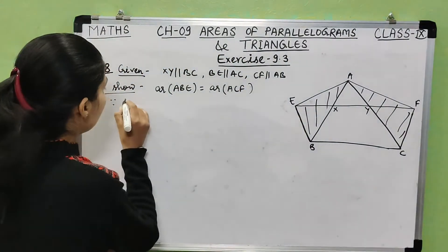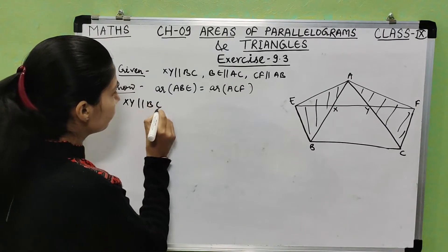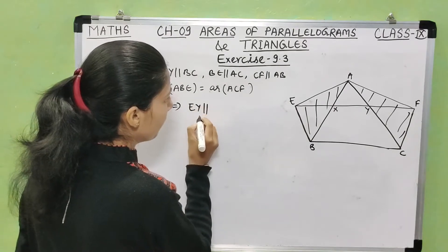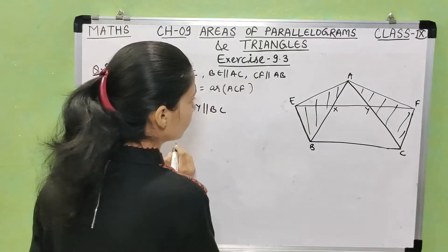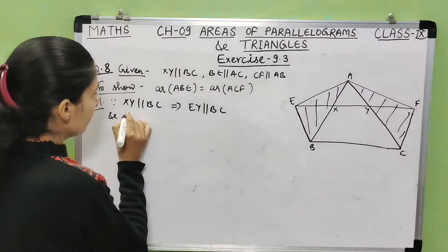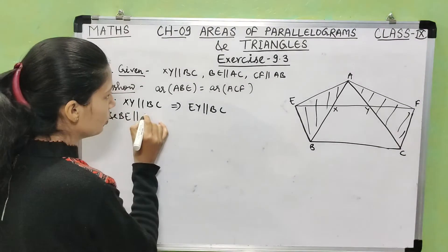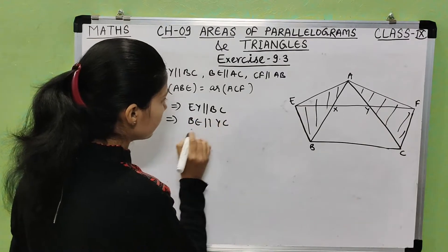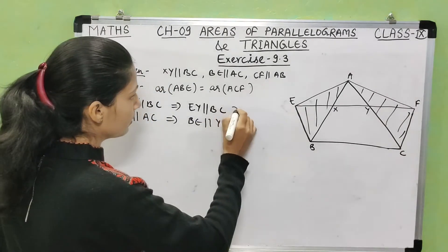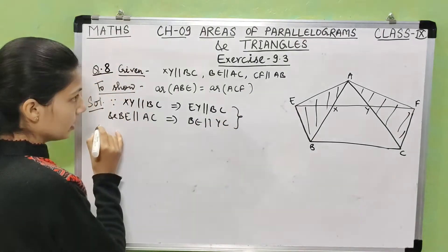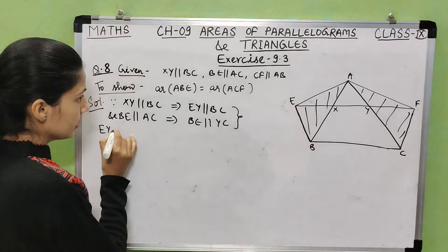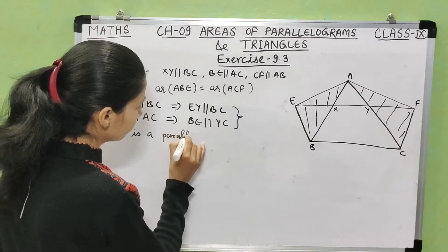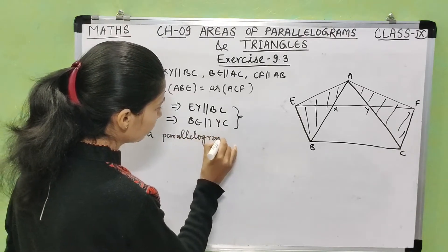Since XY is parallel to BC, EY is parallel to BC. And BE is parallel to AC, which implies BE is parallel to YC. So quadrilateral EYCB is a parallelogram. Similarly, since XY is parallel to BC, FX is parallel to BC. And CF is parallel to AB, so CF is parallel to BX. Therefore quadrilateral XFCB is also a parallelogram.